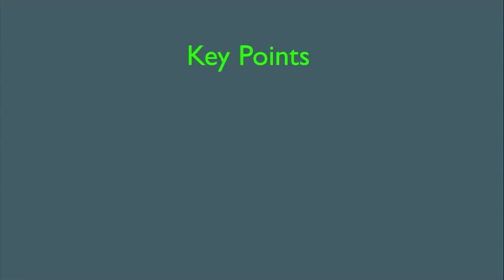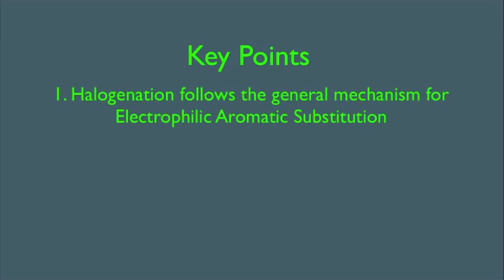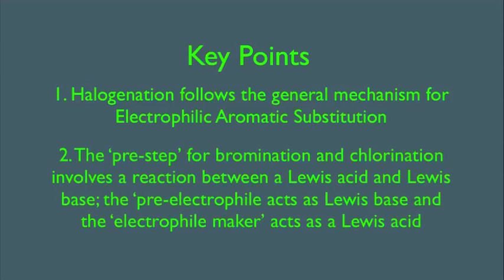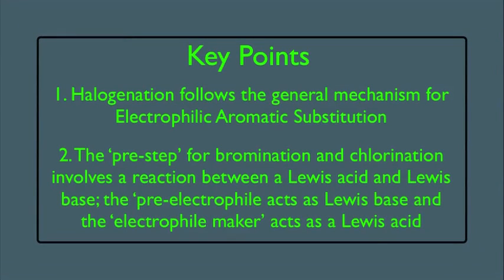In this online lecture, we're going to discuss the halogenation of benzene rings. Our key points are: number one, halogenation follows the general mechanism for electrophilic aromatic substitution, which was learned in a previous online lecture. Number two, the pre-step for bromination and chlorination involves a reaction between a Lewis acid and a Lewis base. The pre-electrophile acts as a Lewis base, and the electrophile maker acts as a Lewis acid.